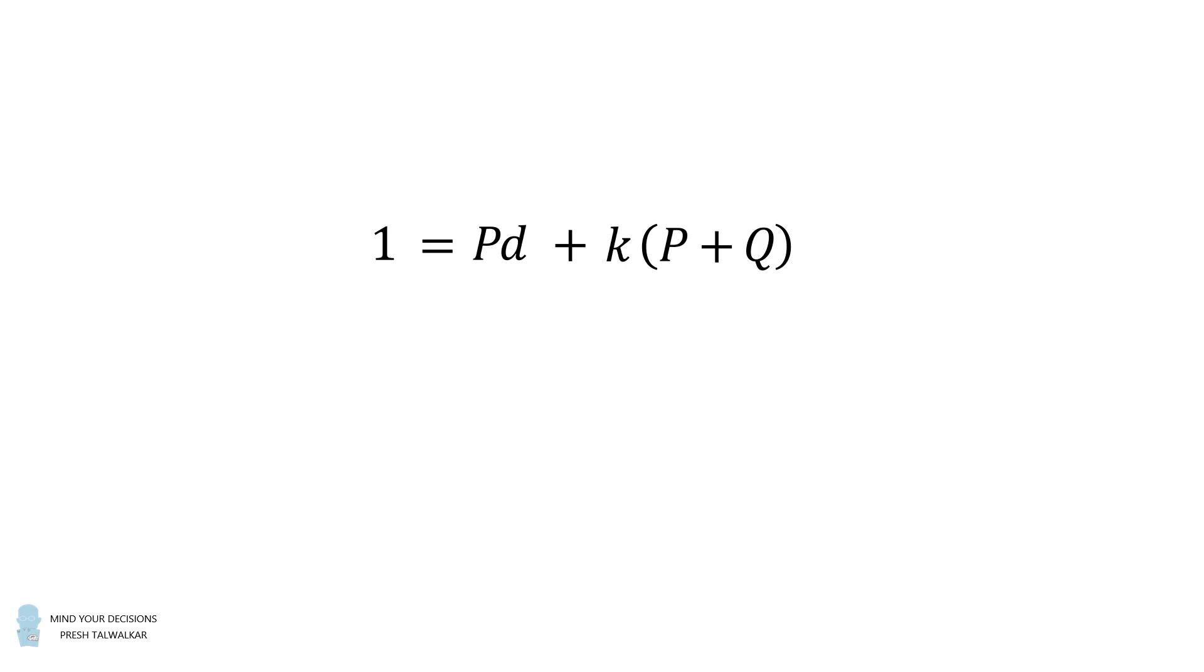On the left hand side we have 1 and that's equal to 1 plus k times 0. We can now equate coefficients. We have 1 is equal to p multiplied by d. This means p is equal to 1 over d. Then we have p plus q is equal to 0. We just solved that p is equal to 1 over d. So that means q is equal to negative 1 over d.